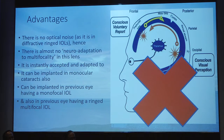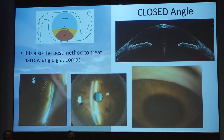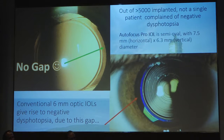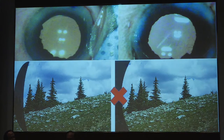From the next day, patients can read 6/6, N6, and computer at 6. Beyond cataracts, it is also ideal for presbyopia, hyperopia, high myopia, and closed-angle glaucomas. Out of more than 5,000 implanted by 65 surgeons over three years, not a single patient complained of negative dysphotopsia. Because of its large size, even in a dilated pupil the IOL edge cannot be seen — even in traumatic mydriasis. The lens is also ideal for various colobomas and mydriatic pupils from narrow-angle glaucoma or trauma.